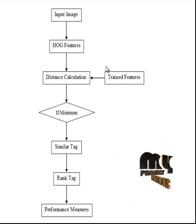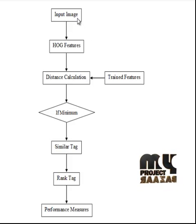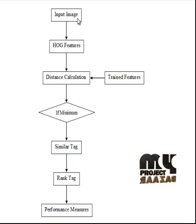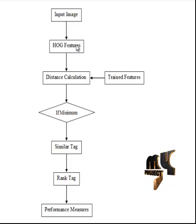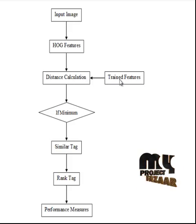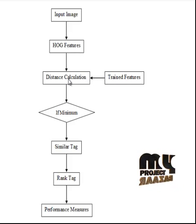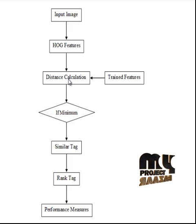Let us see the flow diagram of the process. The input images were taken from the dataset. Visual features were extracted using the Histogram of Gradients feature extraction method. Then the distance between the trained features and the test image features was calculated.